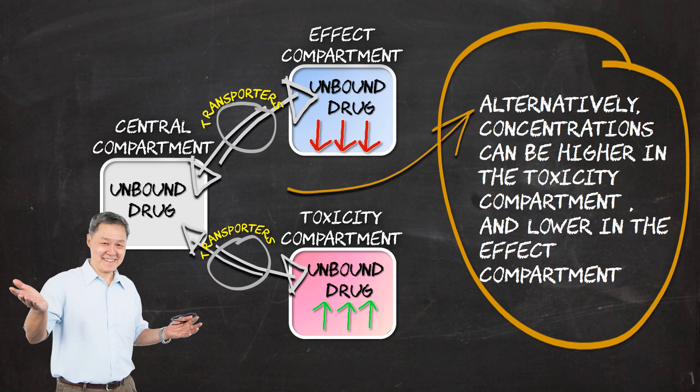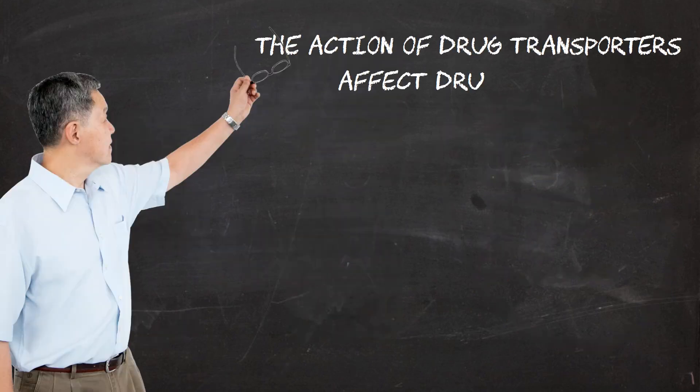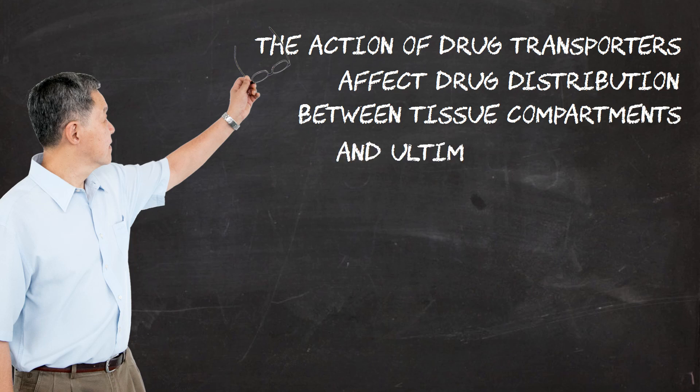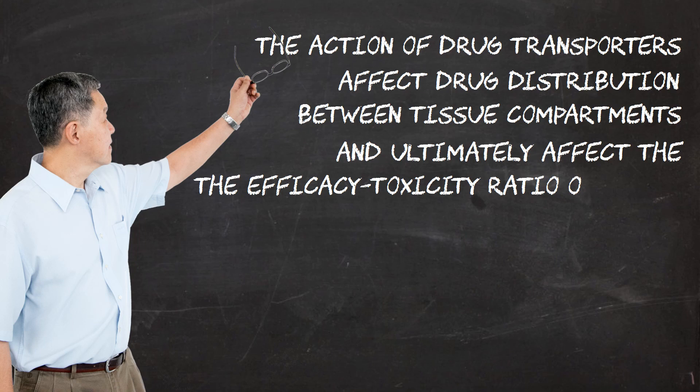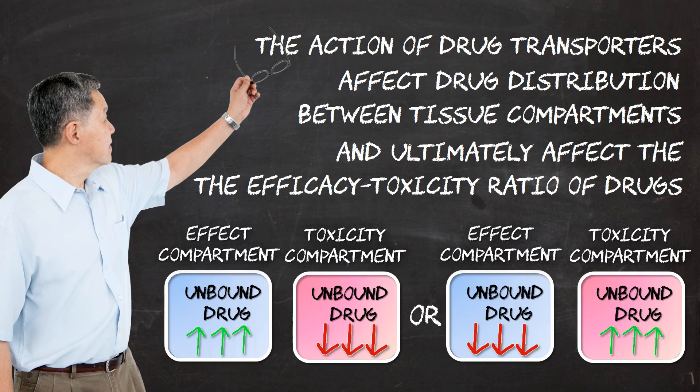In these two scenarios, the concentrations in the central compartment are exactly the same, but the efficacy-toxicity ratio is different between the two scenarios. This second model for drug distribution, which takes into consideration the action of drug transporters, is the definitive model we use nowadays. In this model, what you observe in the central compartment may not explain what you expect in the effect compartment nor in the toxicity compartment, and the effect-toxicity ratio of any drug between individuals can be different because the expression of transporters on the membranes of various individuals can actually be different.